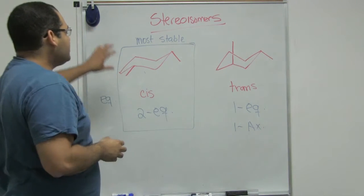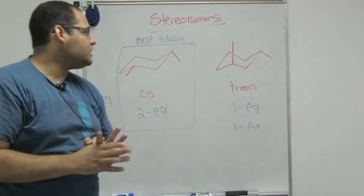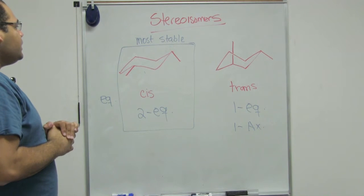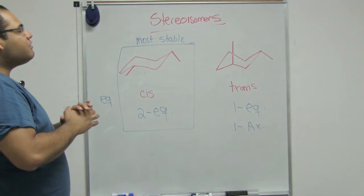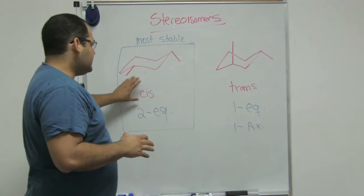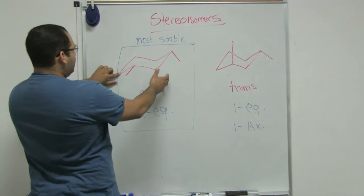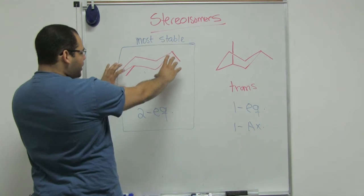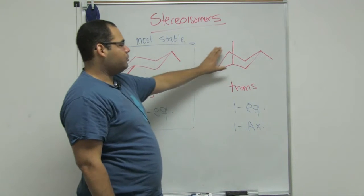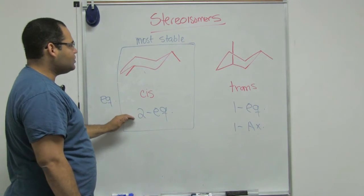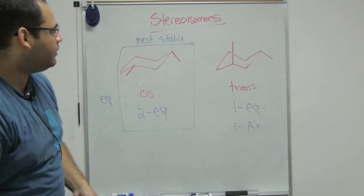Stereoisomers are related to the idea that they have the same connectivity, but the arrangement in space is placed differently. We need to remember that cis and trans is one example of stereoisomers, and we cannot assume that every time we have a trans and a cis, the trans is more stable. In order to assign which one is more stable, we need to put everything in our chair conformation and then check which one has more equatorial positions — whether the cis or the trans. The one that has more equatorial positions is by definition the most stable.